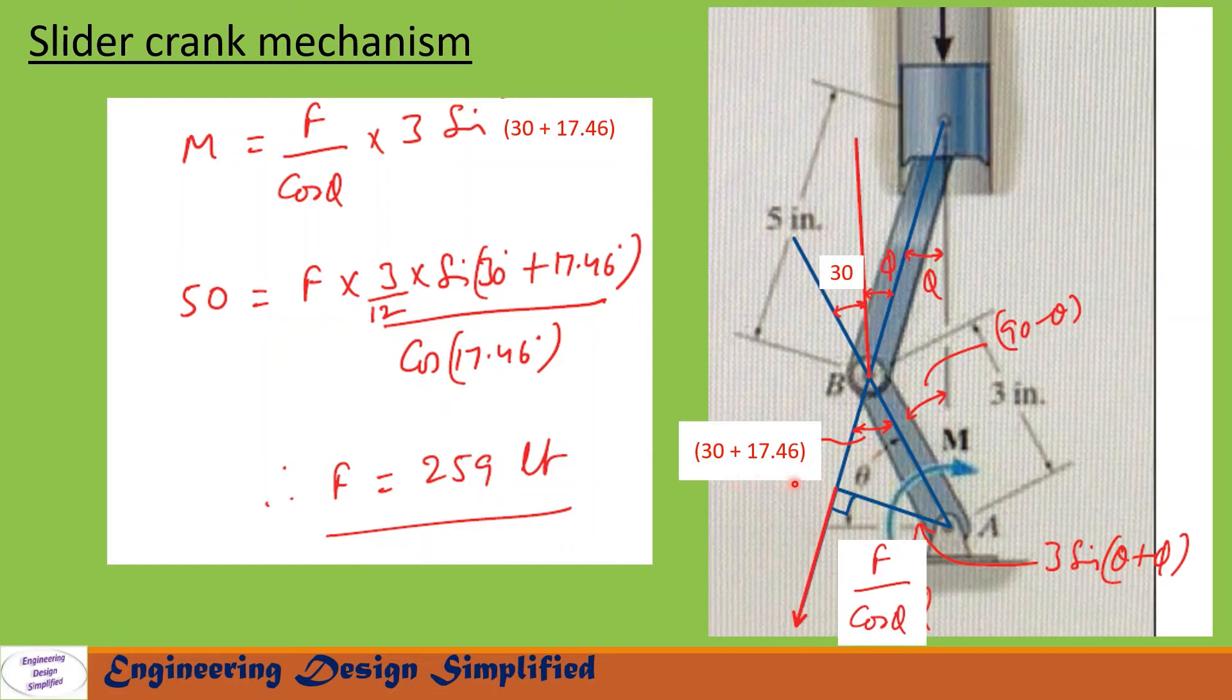Now for this link AB, let us take moments about A. There is a moment torque applied in the clockwise direction M, that is 50 lb·ft. Due to this force F by cos(phi), there is a counterclockwise moment about A. The counterclockwise moment due to F by cos(phi) about A can be written as F by cos(phi) times this distance.